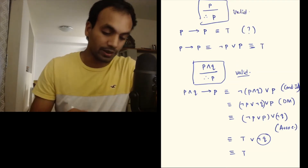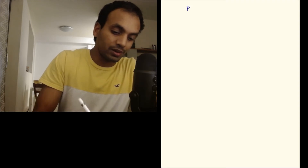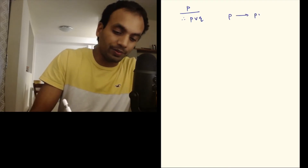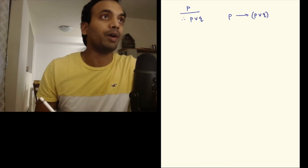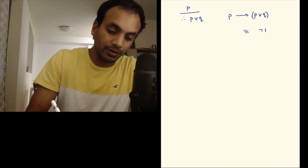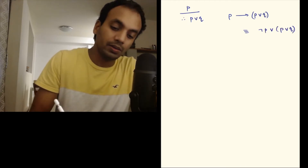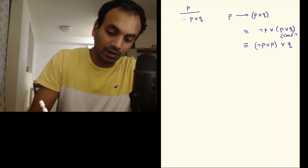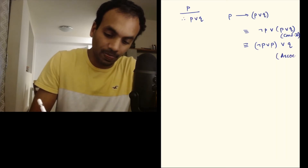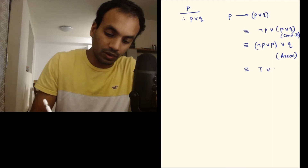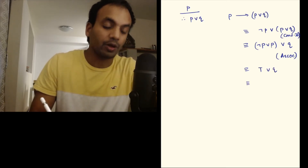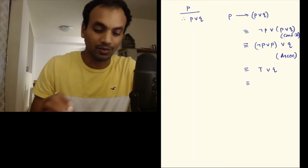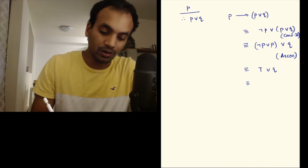Another example: p, therefore p or q. So p implies (p or q) should be a tautology. Using conditional identity, this is negation p or (p or q), which by associativity becomes (negation p or p) or q, which is true or q. Since negation p or p is always true, and true or q is always true by the domination law, this is indeed a tautology.